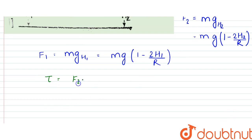so tau would be equal to F2 minus F1 into L by 2. So that would be equal to, we can take MG common. MG common, here it would be 1 minus 2H2 by R minus 1 plus 2H1 by R into L by 2 it will be.